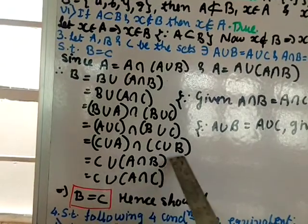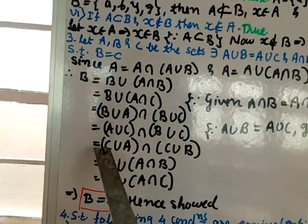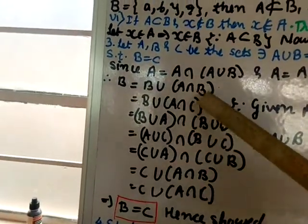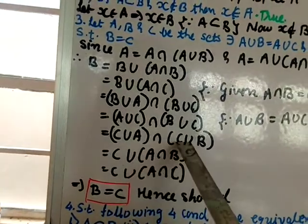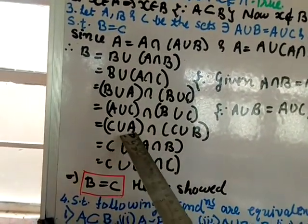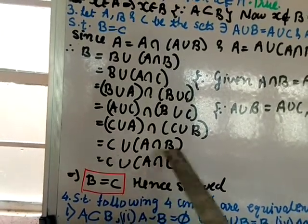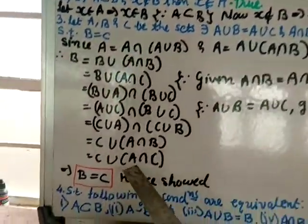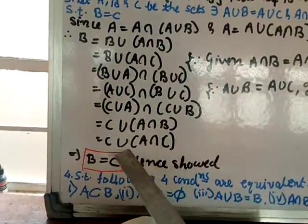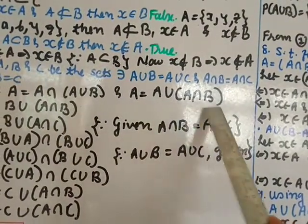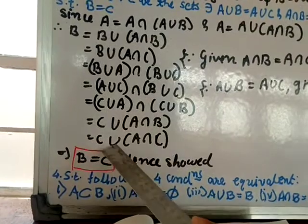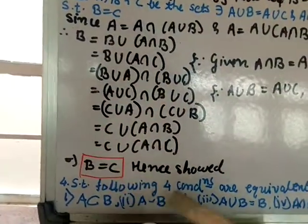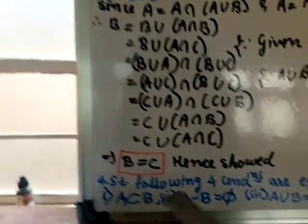Taking C common from the intersection: B = C ∪ (A ∩ B). Again replacing A ∩ B with A ∩ C: B = C ∪ (A ∩ C). Using the property A = A ∪ (A ∩ B), this simplifies to C ∪ (A ∩ C) = C. Therefore B = C. Hence proved.